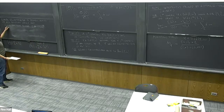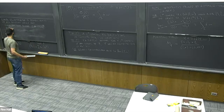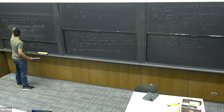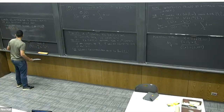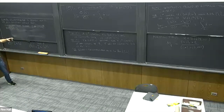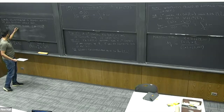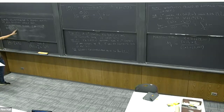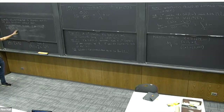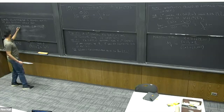The next thing is what's called the Reeb vector field partial_t, which is just the vector field induced by the t coordinate. The important point is that the periodic orbits of phi are in bijection with periodic orbits of this vector field.